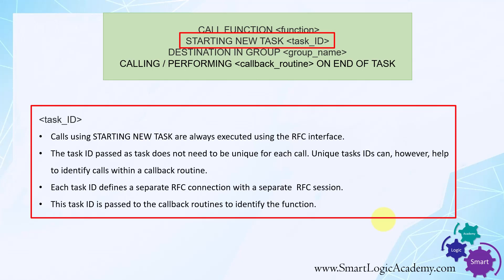Task ID: calls using STARTING NEW TASK are always executed using the RFC interface. The task ID passed does not need to be unique for each call; however, a unique task ID can help identify a call within a callback routine. Each task ID defines a separate RFC connection with a separate RFC session, and is passed to the callback routine to identify the function. In short, task ID is a mandatory field used to identify a particular RFC call and its result.